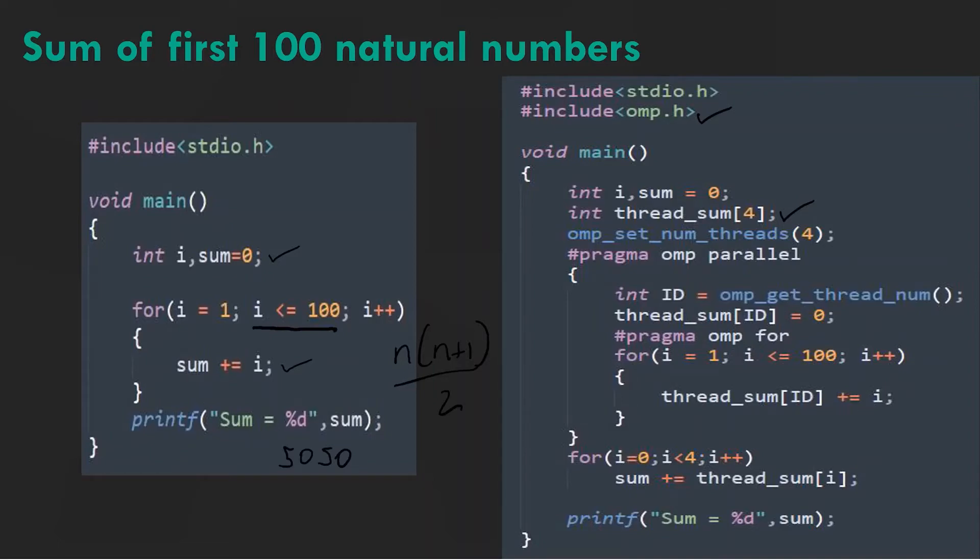Our next statement omp_set_num_threads sets the number of threads used by the compiler to 4. We can skip this line to let the compiler choose for us.